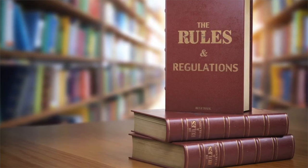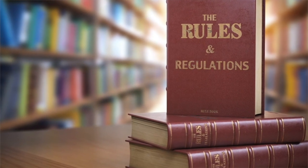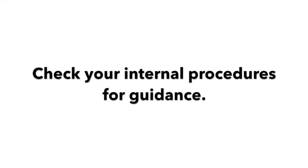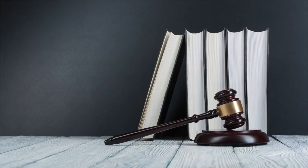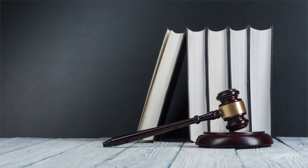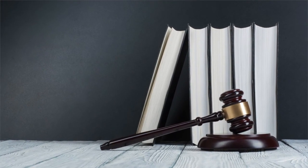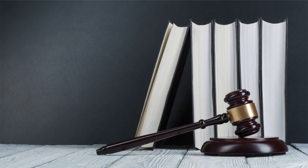So, the short answer to the question of what to do if someone has violated your code of conduct is: check your internal procedures for guidance. But ideally, check them before you are faced with a violation, as the best time to establish a reasoned and logical approach to a potential situation is any time other than when you are in the midst of it.